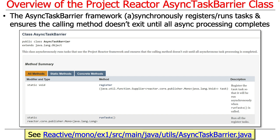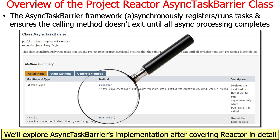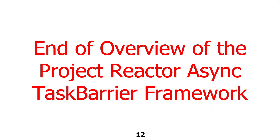The Async Task Barrier framework will either asynchronously or synchronously run these tasks and ensure the calling method doesn't exit until all the asynchronous processing completes. The key methods are register, where you register tasks, and runTasks, which returns a Mono. By returning a Mono, the caller can decide whether to block or not. We'll cover the implementation details in much finer granularity after we talk about the reactor operators in more detail, since it wouldn't make sense to discuss it before you've been exposed to those.